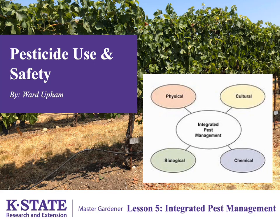An example of physical control would be hoeing a garden to remove weeds. Cultural control would include rotating crops and selecting pest resistant varieties. Biological control involves reducing pest populations by the use of natural enemies.